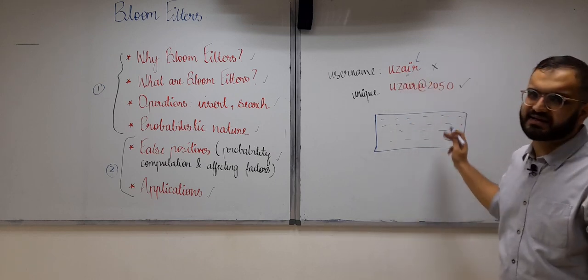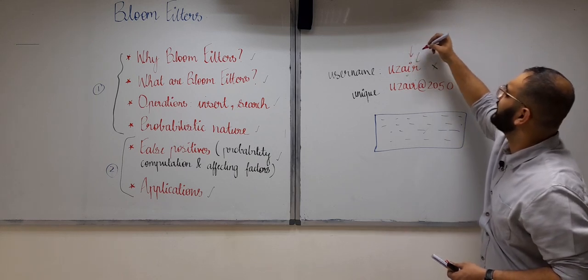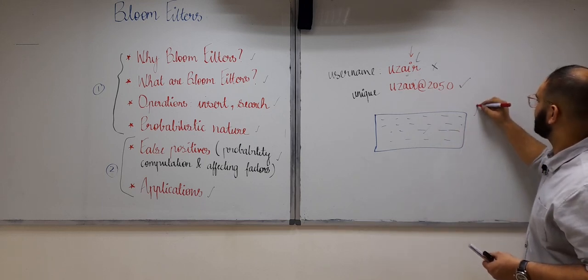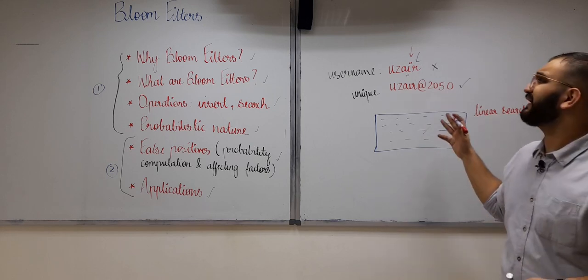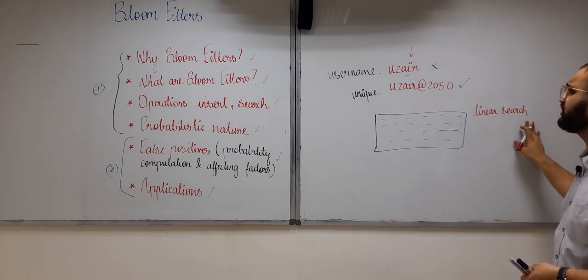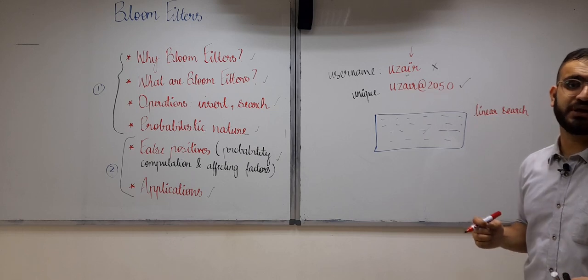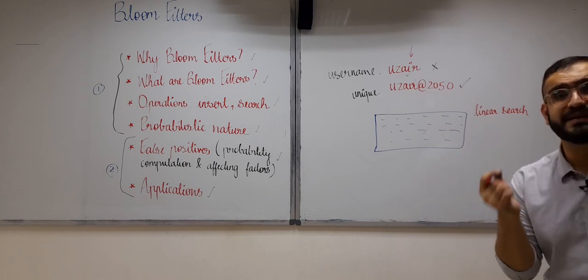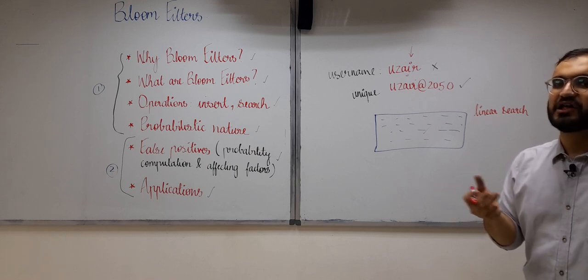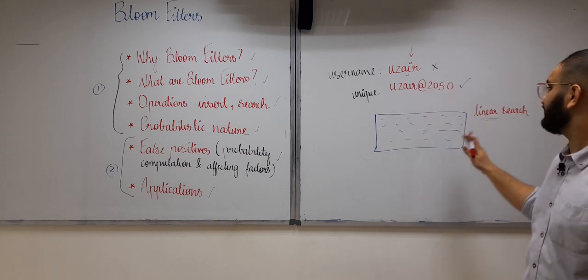What might have happened is that the username 'uzair' was searched in this database, it was found, and that is why it was declared as invalid or non-unique. This suggests a linear search. But there are millions of Instagram users — do you think linear search is efficient? Probably not, because the response time is very short — in milliseconds you know whether a username is unique.